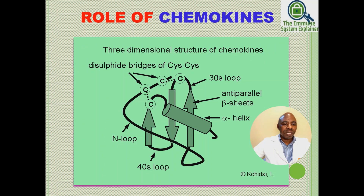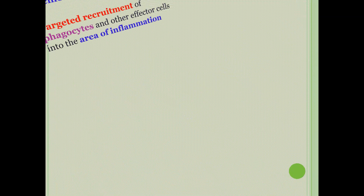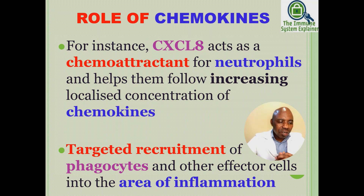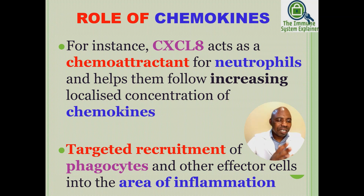There is a diagram showing the three-dimensional molecular structure of chemokines. For instance, CXCL8, also called Interleukin-8, acts as a chemoattractant for neutrophils and helps them follow increasing localized concentration of chemokines to migrate to the site of injury. What happens is targeted recruitment of phagocytic cells following chemotaxis, so that they are not going to miss the point of inflammation but are directed right to it.